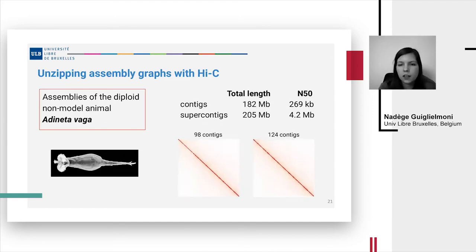We have been testing HiC2GFA on the genome of the diploid non-model animal Adenota vagai. And so we did a first assembly and the contigs assembly size was 182 megabases with an N50 of 269 kilobases. So the N50 represents the continuity of the assembly. And basically the higher the N50, the higher the continuity of the assembly.